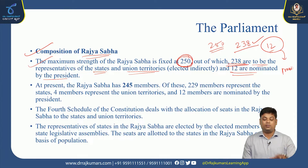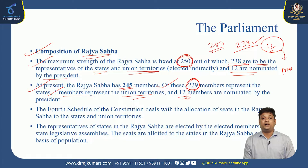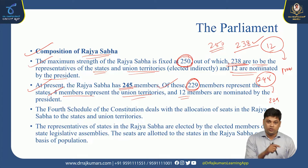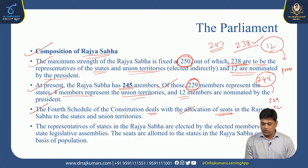At present, the Rajya Sabha has around 245 members. Out of these, 229 members represent the states, 4 members represent the union territories, and 12 members are nominated by the President of India. The fourth schedule of the Indian Constitution deals with the allocation of seats in the Rajya Sabha to the states and union territories.